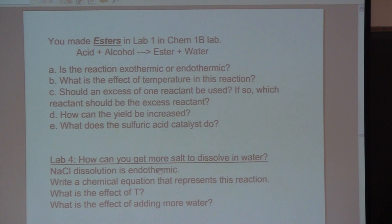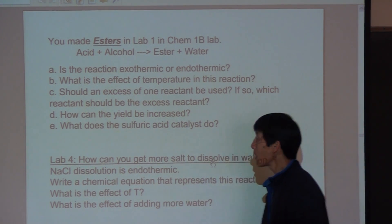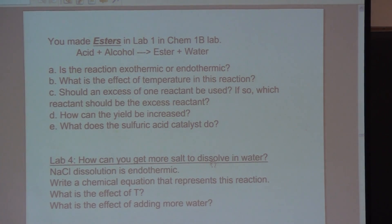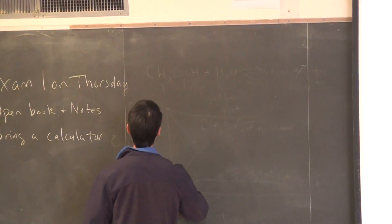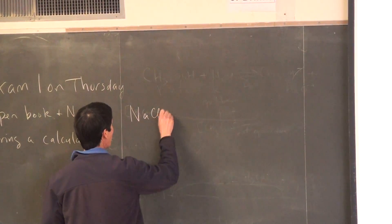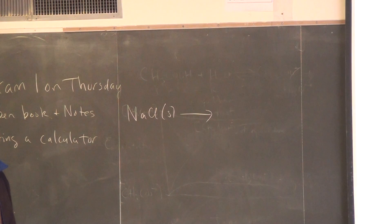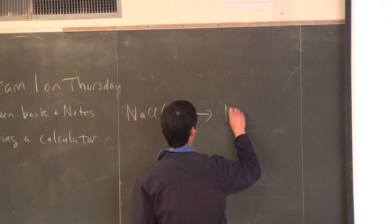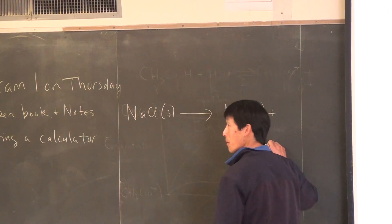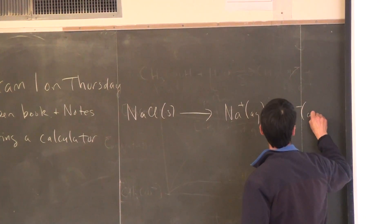One of the lab reactions is dissolving salt in water. The dissolution of salt in water is endothermic, so heat is considered a reactant. Let's write a chemical equation that represents this reaction. For reactants, we can say we have NaCl solid, and that's going to form Na⁺ aqueous and Cl⁻ aqueous.